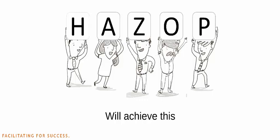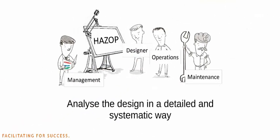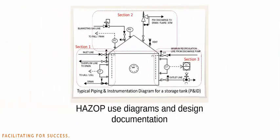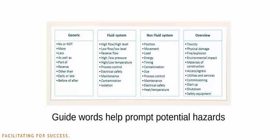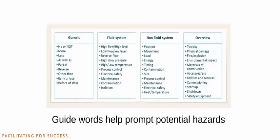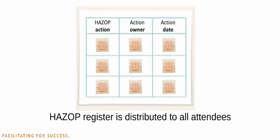HAZOPs, or Hazard and Operability Studies, that occur during the final design stages will achieve this. The HAZOP process involves a multi-functional group of people that analyze the design in a detailed and systematic way. A HAZOP uses piping and instrumentation diagrams, flow diagrams, and design documentation. A specific set of guide words are also used to help prompt potential hazards.